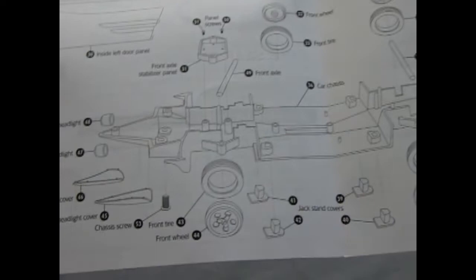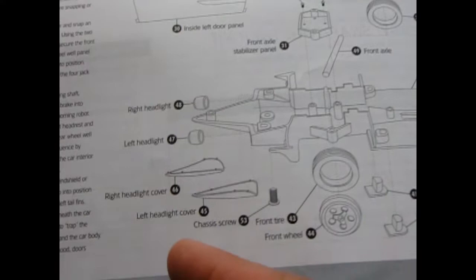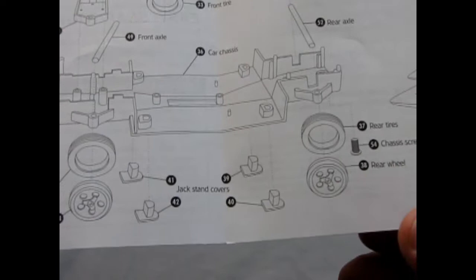It shows you how to put the axles in and it's got some screws to screw the panels down. It's got those headlights that are underneath in the front of the car, our wheels, and these jack stands that popped out of the bottom of the car and would cause the car to jump in the cartoons.